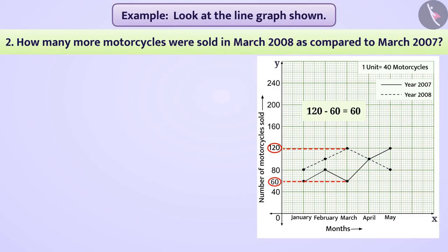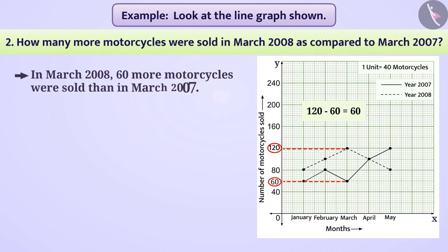So, we can say that in March 2008, 60 more motorcycles were sold than in March 2007.